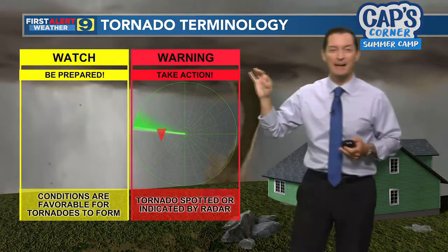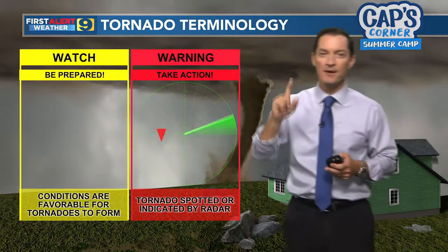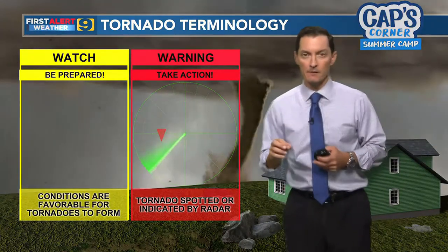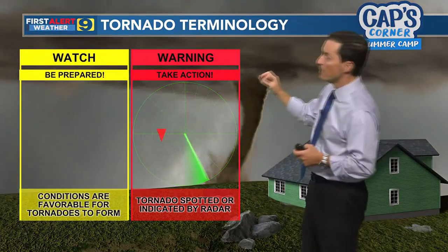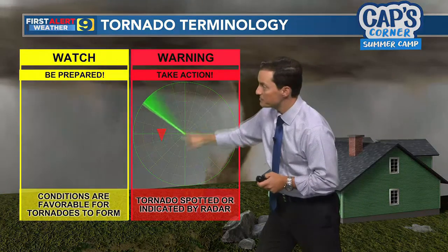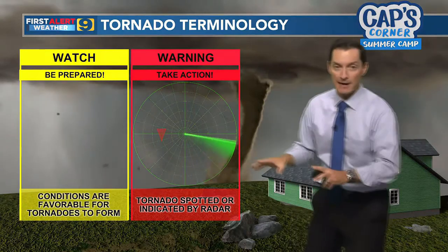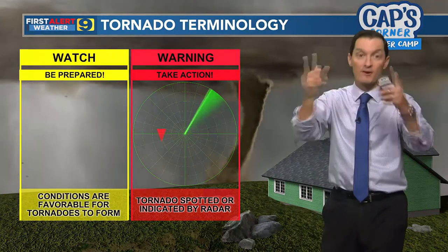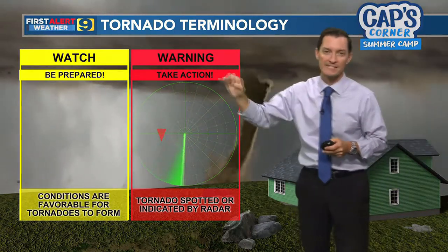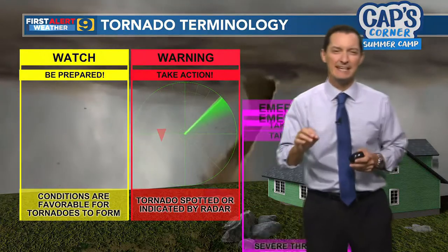But when we issue a tornado warning, now it's time to take action — get to your safe place. A tornado warning means that one has actually been spotted on radar, or somebody on the ground with their eyes has actually seen a tornado. So when a warning is out, we really need to take it seriously.